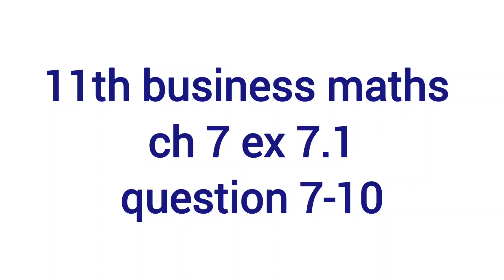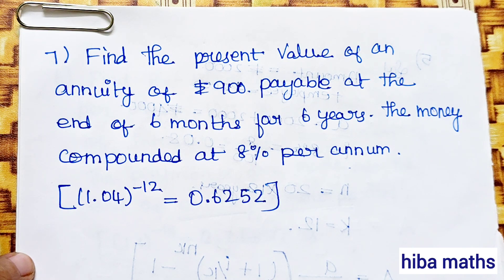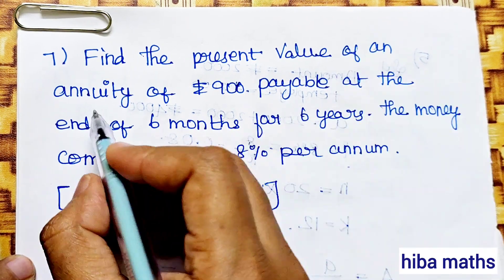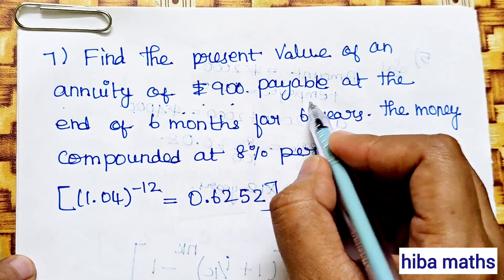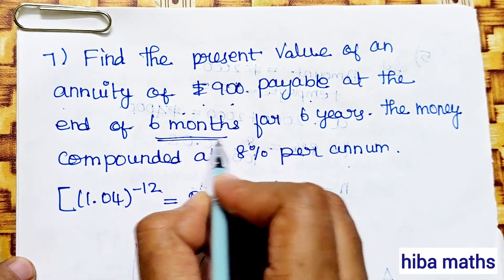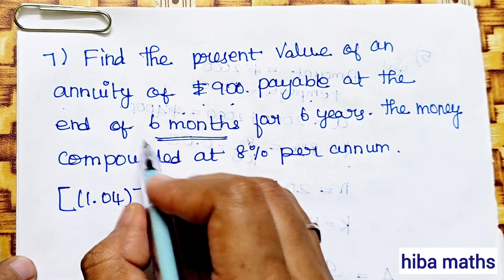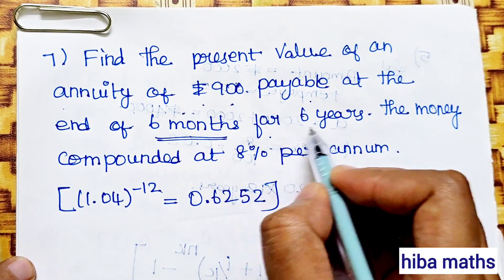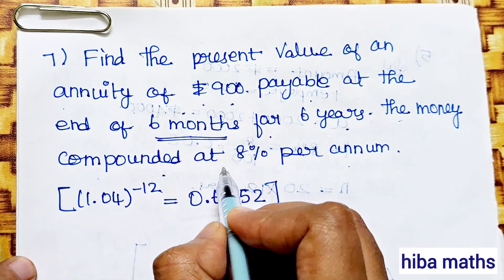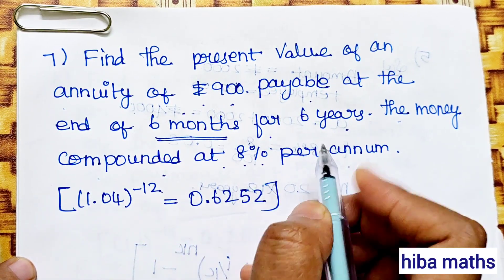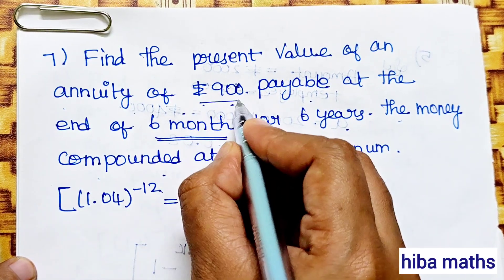Hello students, welcome to HibaMax 11th Standard Business Math, Chapter 7, Exercise 7.18, 7th question. Find the present value of an annuity of Rs.900 payable at the end of 6 months, for 6 years, with money compounded at 8% per annum.